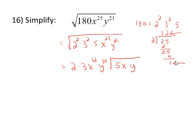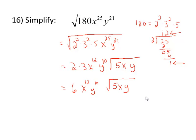If your index had been 3 for a cube root, you'd divide by 3; if it had been a 4th root, you'd divide by 4, and so on. Just to clean this up, 2 times 3 is 6, so we have 6x to the 12th, y to the 10th, times the square root of 5xy.